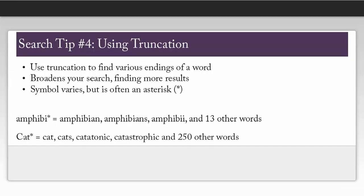The fourth tip is to use a truncation or wildcard symbol. Putting a symbol such as an asterisk, which is used in most databases including Biological Abstracts, at the end of a root word will find all terms that begin with those letters. It is a good way to find more search results. The symbol varies by database, so be sure to check the search tips to ensure you choose the correct one. Be careful when truncating more than three or four letters, as you may be allowing for a lot more words than you bargained for.